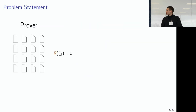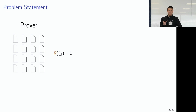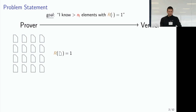Here is the problem we are trying to solve. A prover has a large number of data elements. There is a predicate R that for each element tells if it is interesting or not — if R returns 1, the element is interesting. The prover's goal is to convince the verifier that he knows more than NF elements of interest for which the predicate equals 1. One way is to send NF+1 elements, but this is inefficient if NF is large.